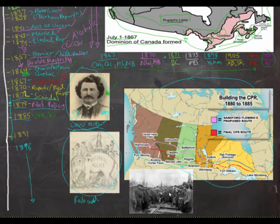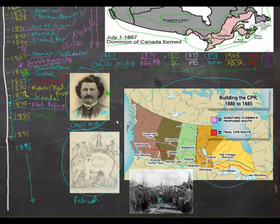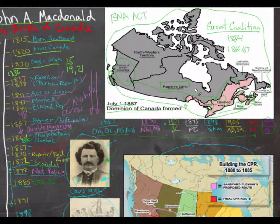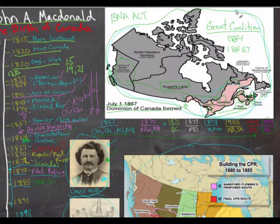Later in 1885 also saw the completion, finally, of the CPR — with the final spike being nailed in British Columbia. Looking back at MacDonald's legacy, there is obviously the black mark of the Riel incident, however you side on that — very controversial. But ultimately, MacDonald's leadership turned this small four-province country into this entirely giant continental landmass of a nation we have today, and most of it was done under his leadership. That's a good place to start with MacDonald and to get a good grasp of how Canada started as a nation.